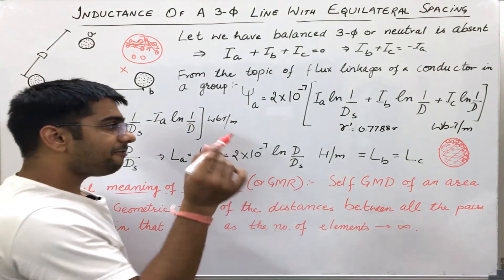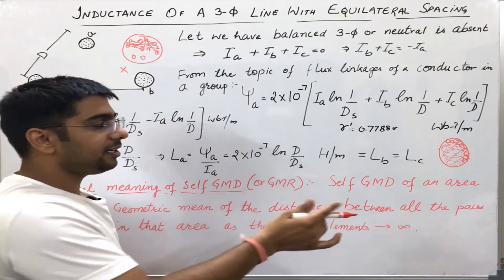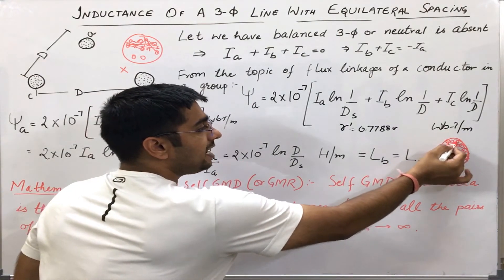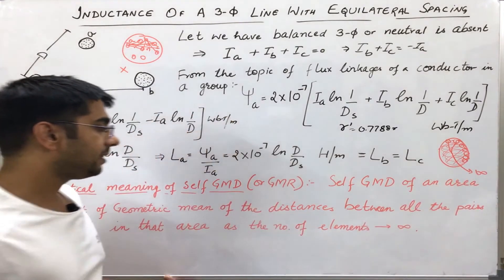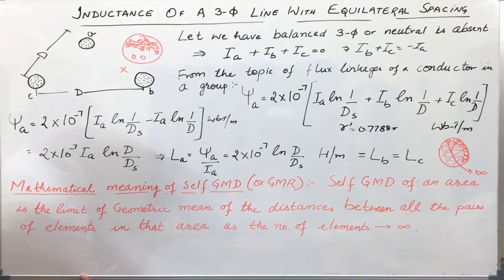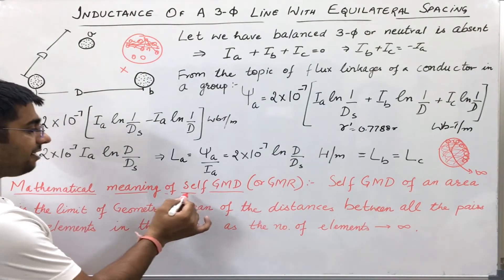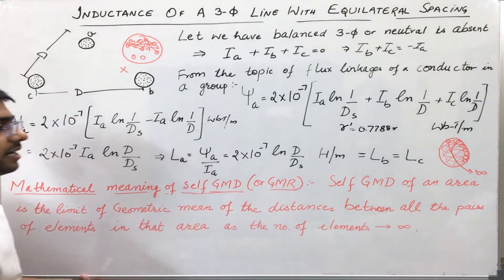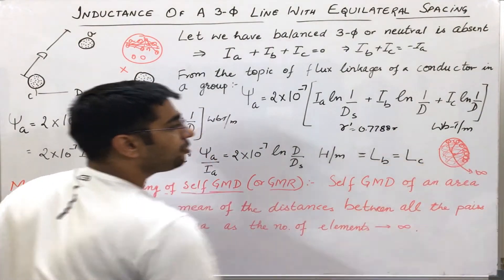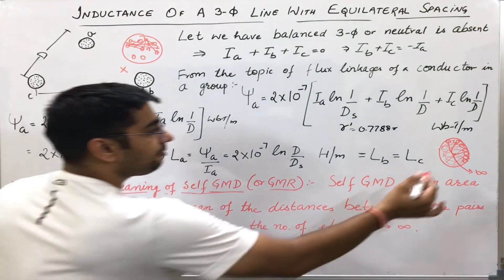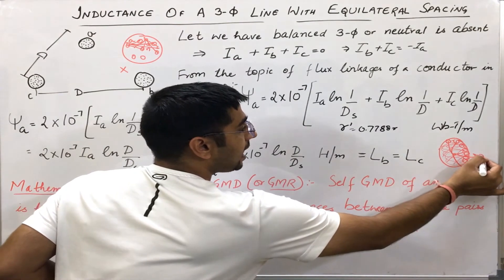Now, if I find the mean of the distances between all such elements, when the number of elements go to infinity, then what I will get will simply be the self-GMD or the GMR of that conductor. And for a solid conductor, it can be derived using mathematics and limits that if the radius of this conductor is R,